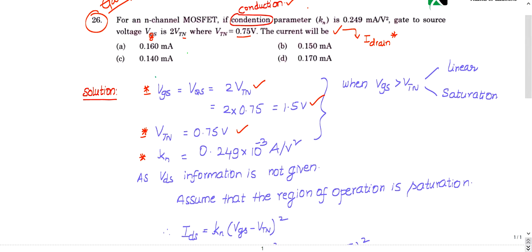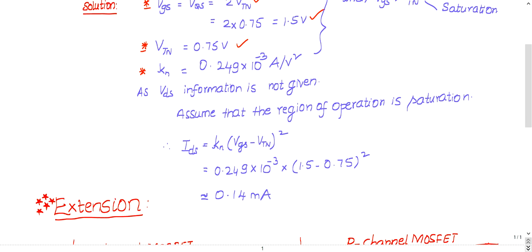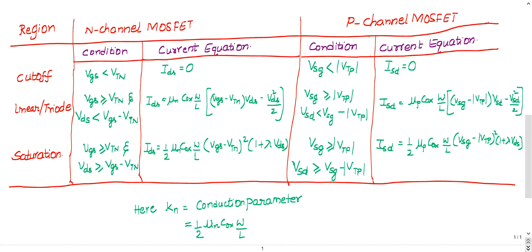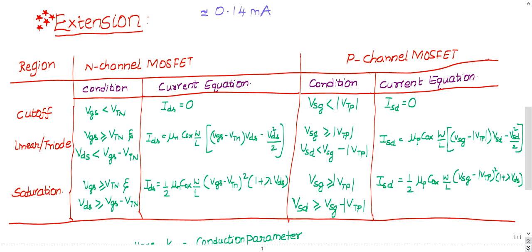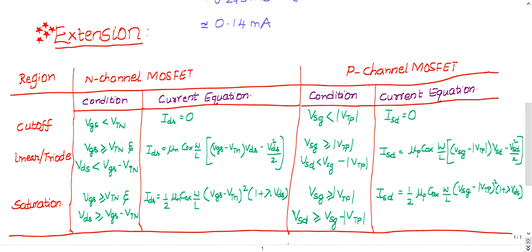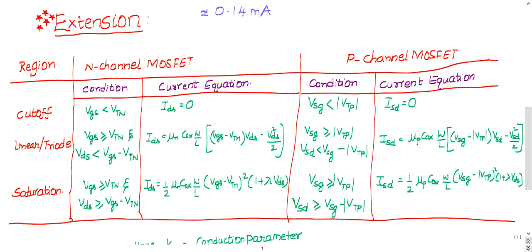Based on the given data, you need to know which region of operation the MOSFET is in, and then apply the appropriate current equation. Before solving, let us see the extension first — you can solve the question within one minute after this. Note down this extension or take a screenshot at any cost. Different books give wrong formulas and wrong assumptions, so try to remember this. It may feel very difficult, but it is not — I will give you a shortcut technique.